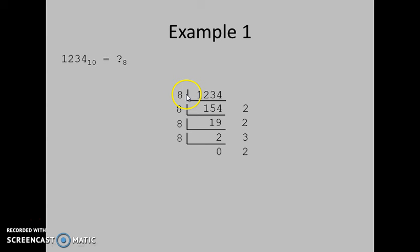Therefore, 1234 divided by 8 equals 154 with remainder 2. 154 divided by 8 is 19 with remainder 2. 19 divided by 8 is 2 with remainder 3. And finally, 2 divided by 8 is 0 with remainder 2.